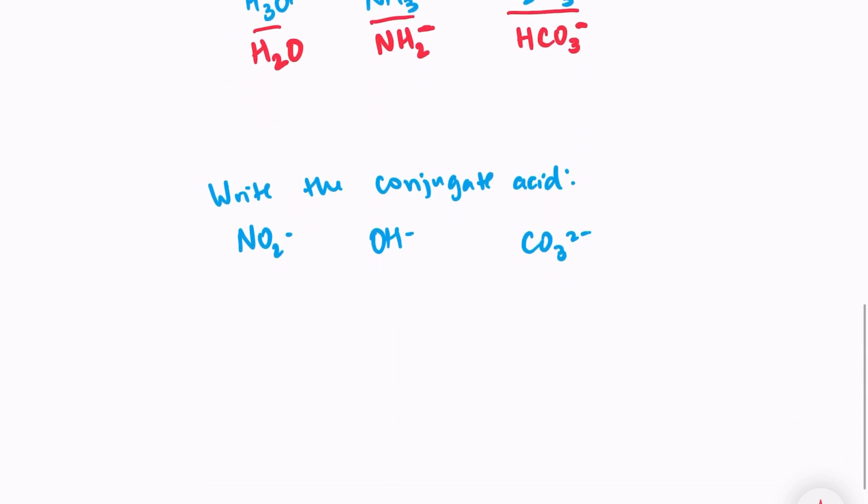The next set of questions says write the conjugate acid. So now we're going to start with bases. And remember, a base is going to accept or gain an H+. A base will gain an H+, so we're going to add H+ to find the conjugate acid.